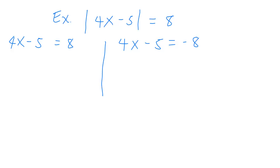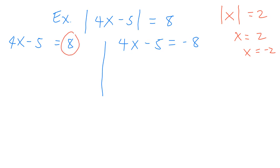Why do we have two solutions? For a simple absolute value equation, x can be positive 2 or negative 2, because taking the absolute value of a number gives you the positive value. So you have two possible solutions that yield positive 8 and negative 8.